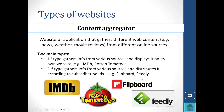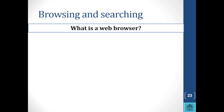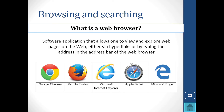What is a web browser? It is a software application — a program — that allows one to view and explore web pages on the web, either via hyperlinks or by typing the address in the address bar. Google Chrome is a web browser; it is not a search engine. Please remember that.